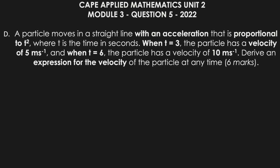A particle moves in a straight line with an acceleration that is proportional to t squared, where t is the time in seconds. When t is equal to 3, the particle has a velocity of 5 meters per second. And when t is 6, the particle has a velocity of 10 meters per second. Derive an expression for the velocity of the particle at any time.